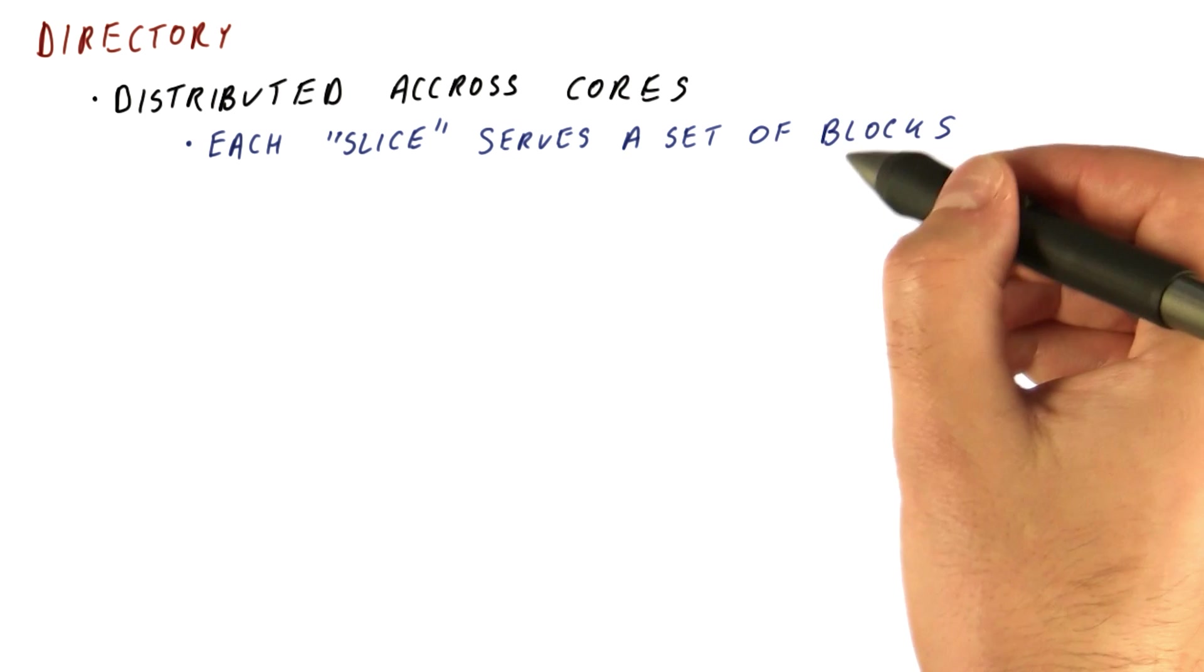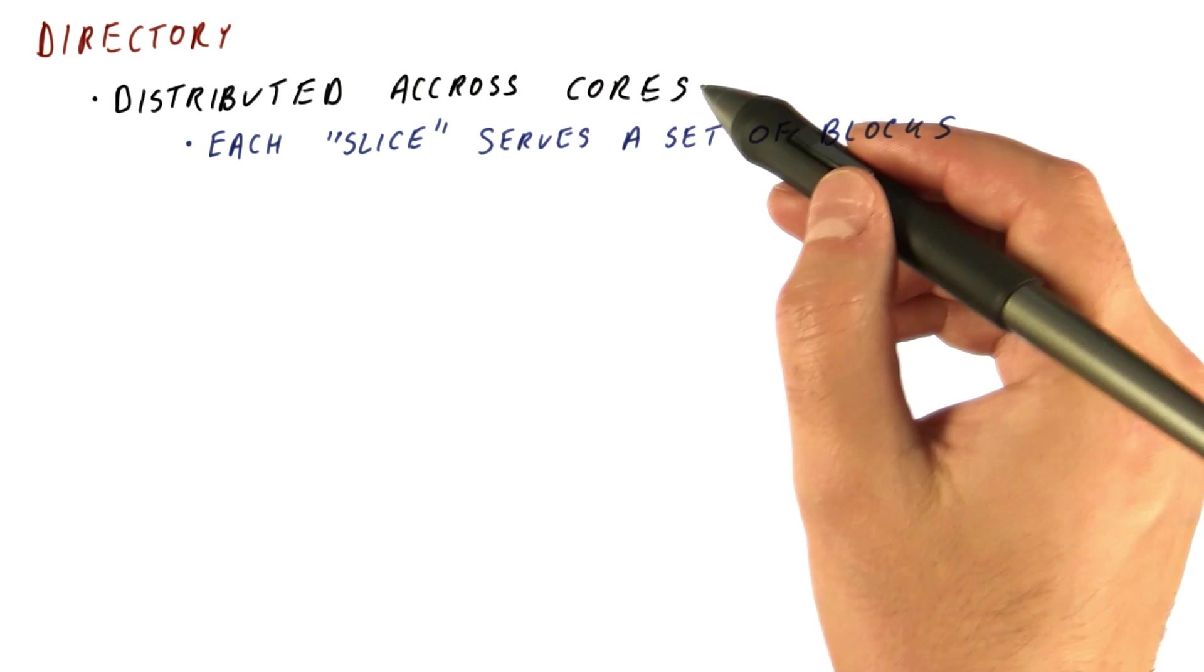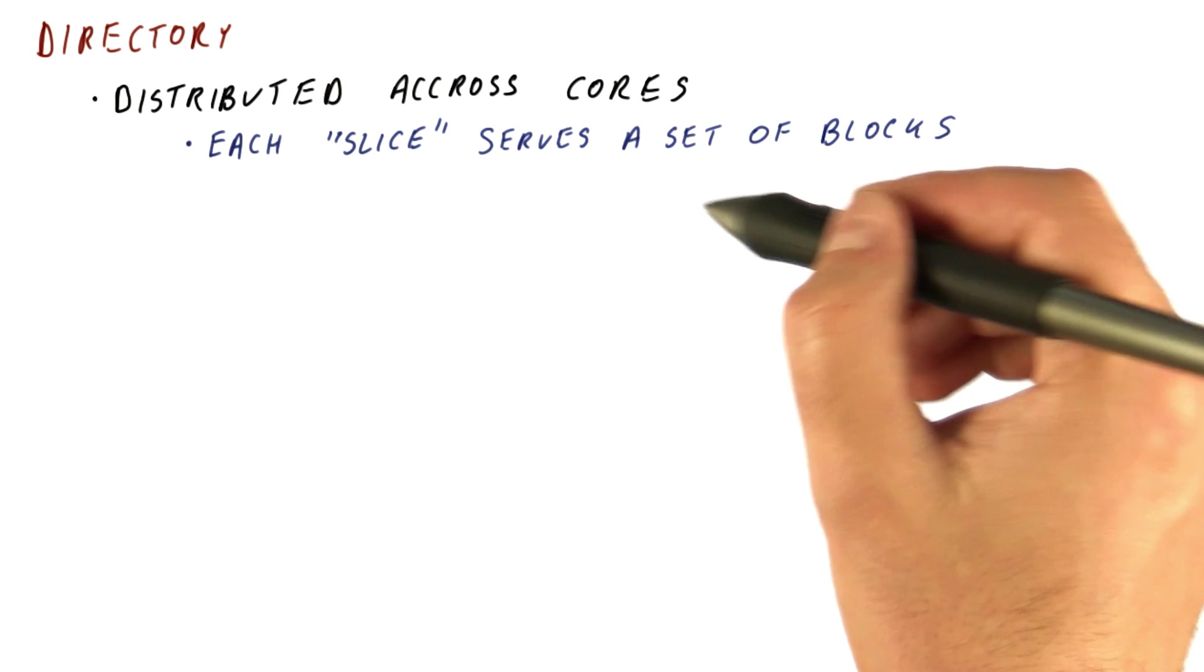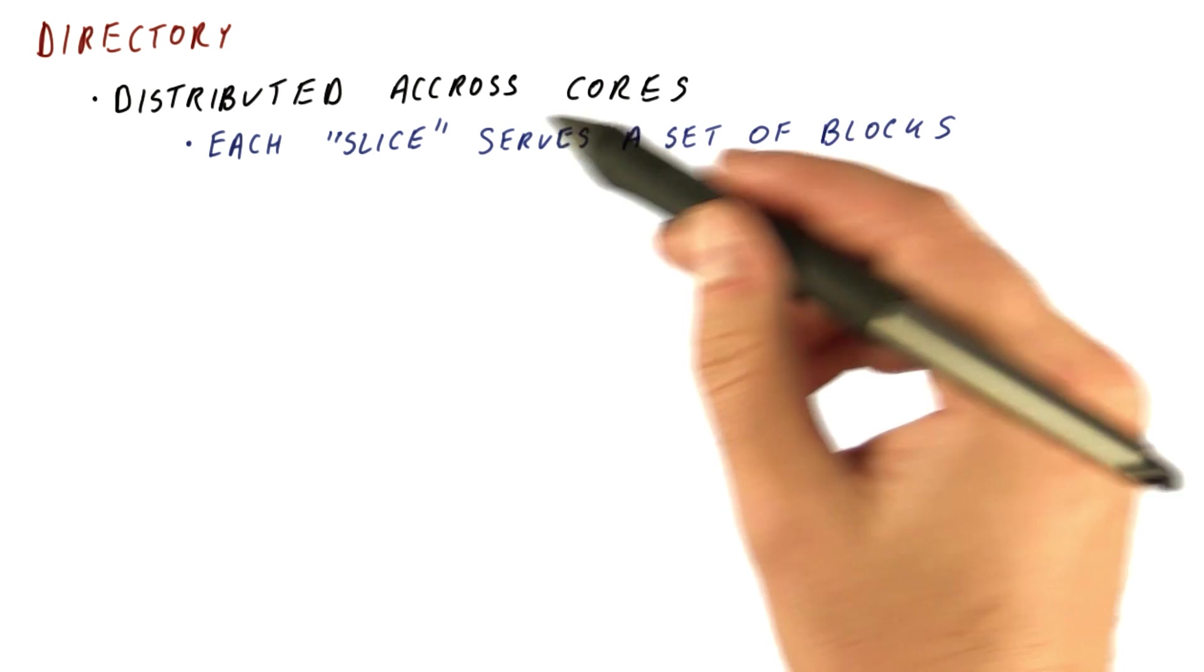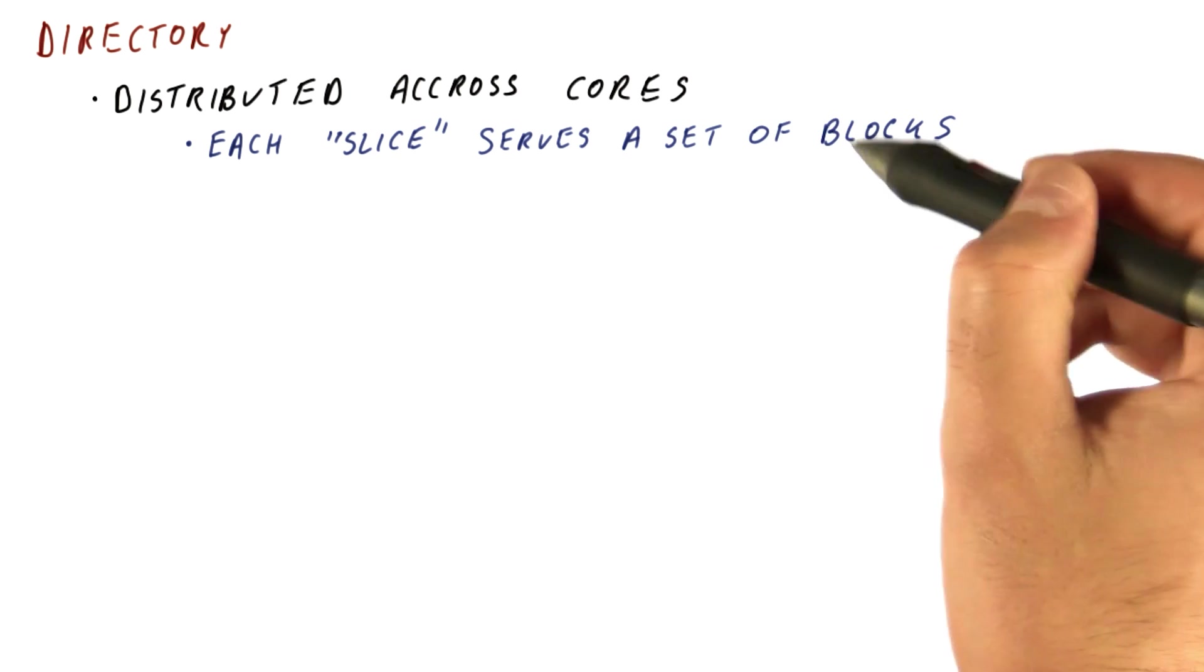And that means that different blocks will be served by slices that are in different places, and that's how we achieve a higher bandwidth. Because really each slice could operate independently, because it serves a disjoint set of blocks.